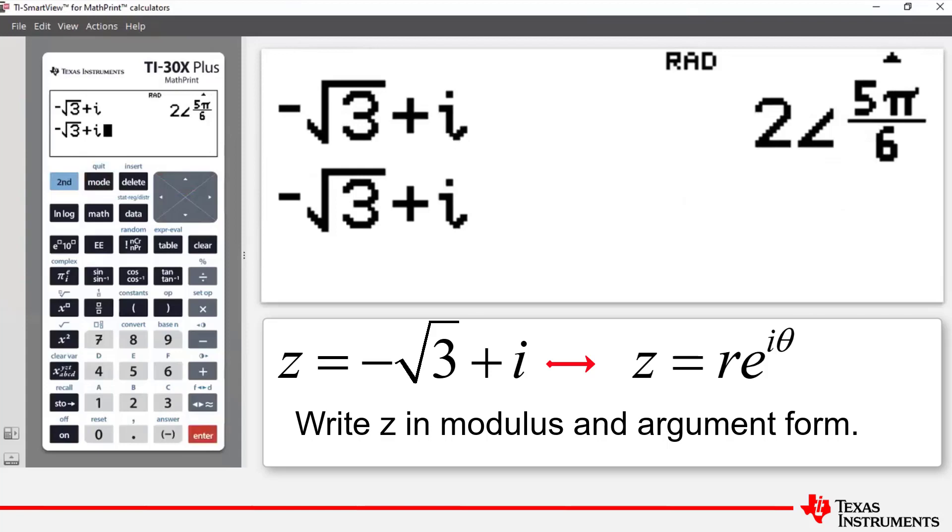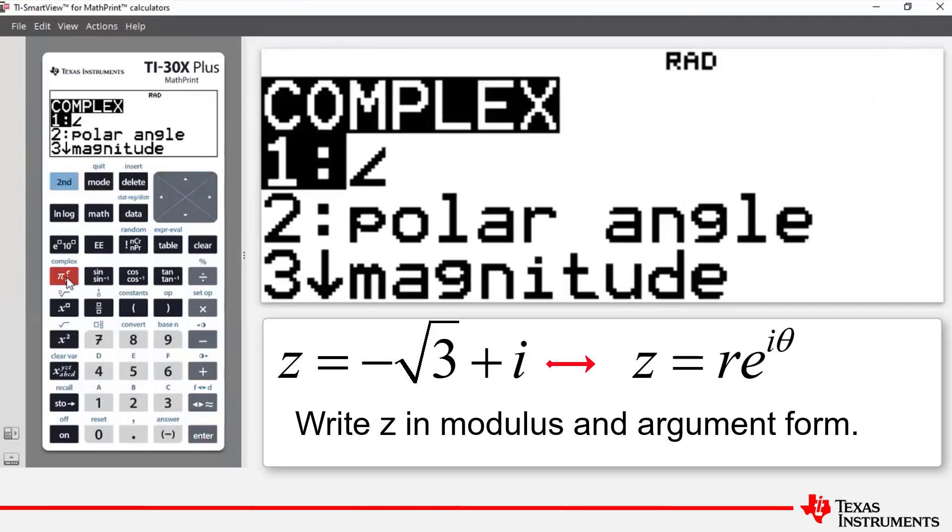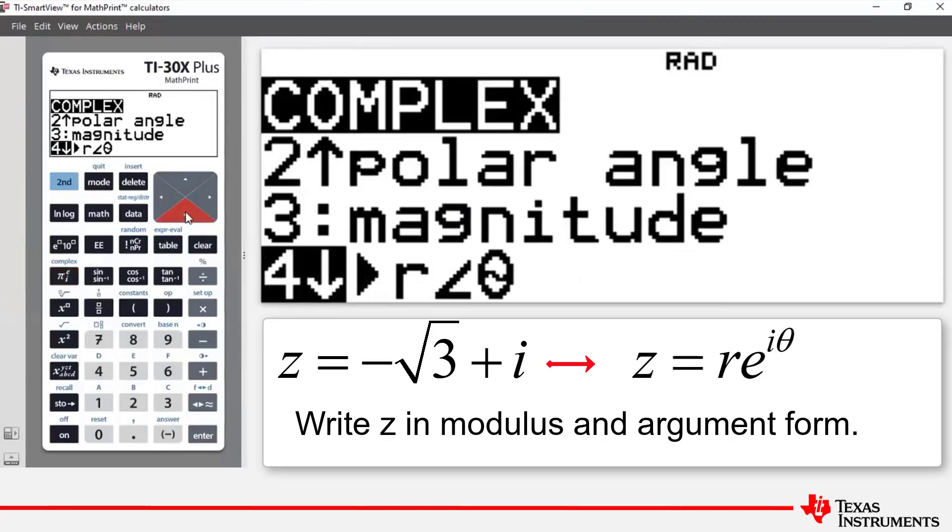And this is using the complex number menu. So we press second and then the pi ei button. It takes us to our complex number tools. And you can see there that if we scroll down, our option 4 is our angle theta. So in other words, modulus argument form.